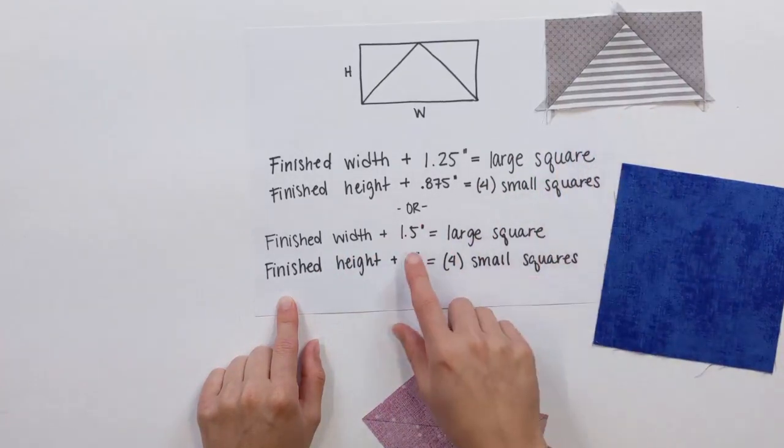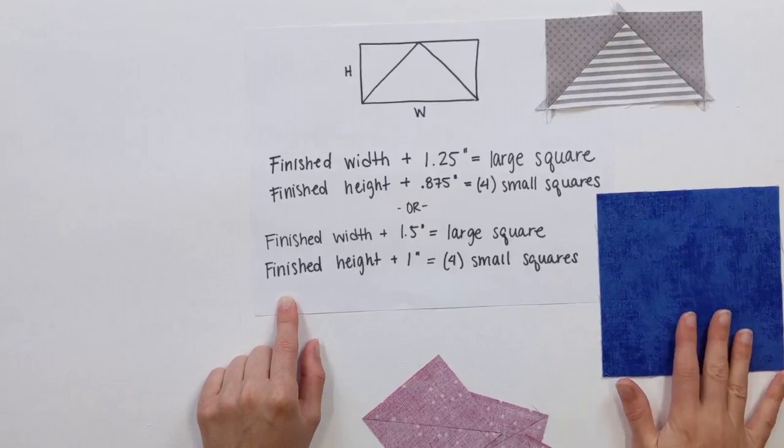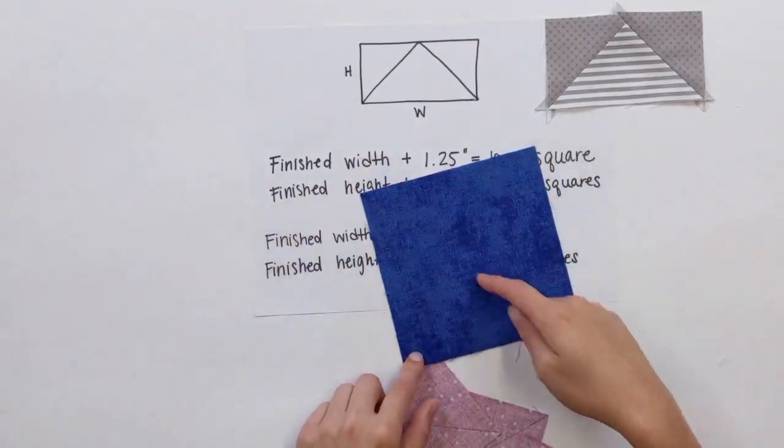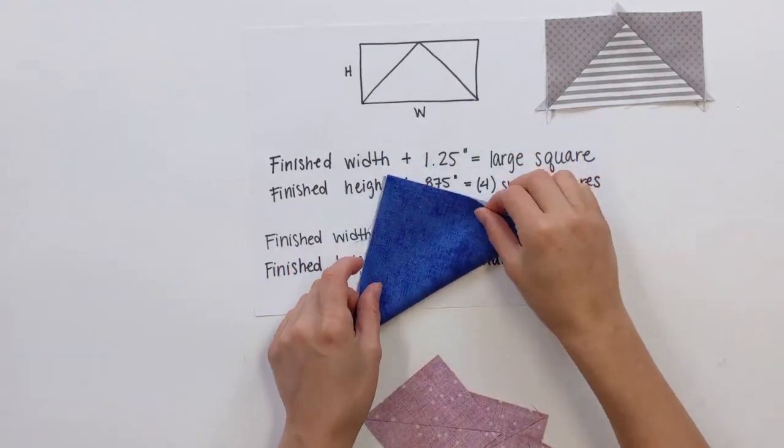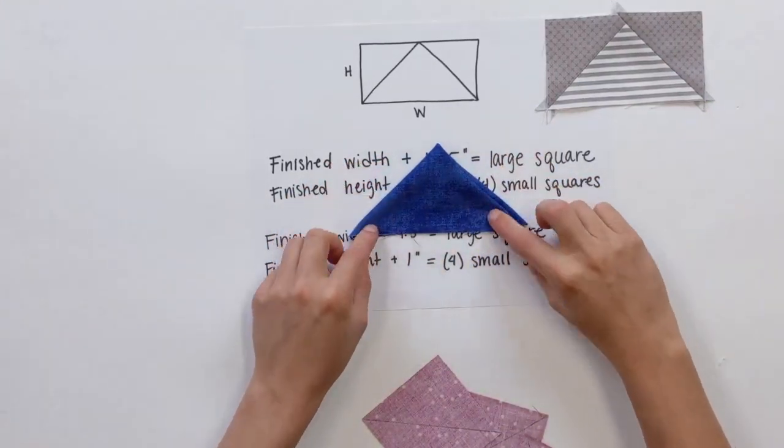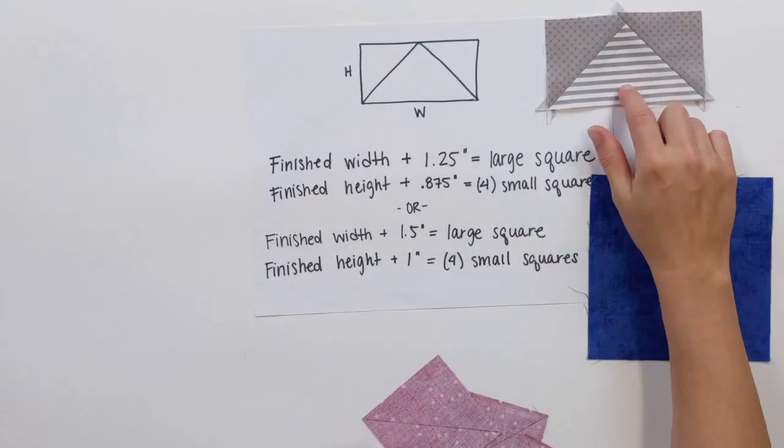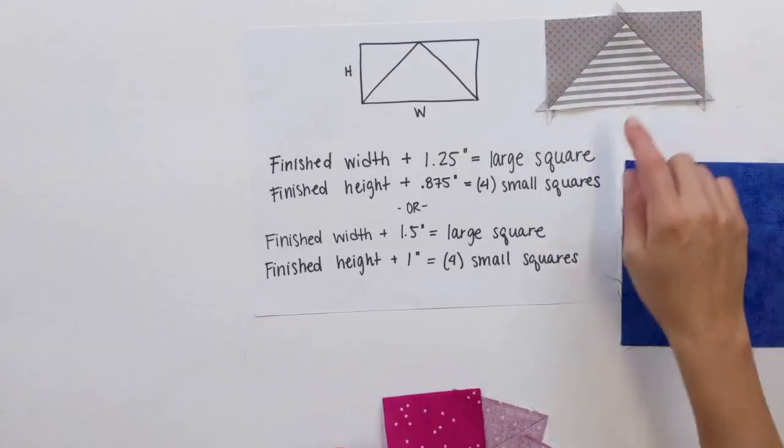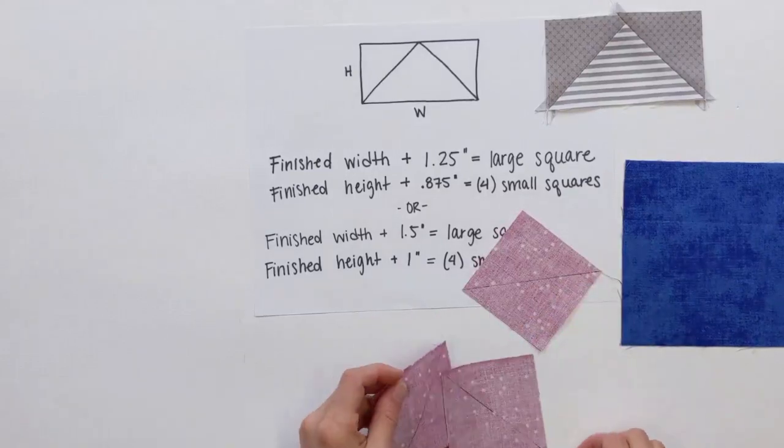And so what I've done is I've actually cut all of these using this formula here. Our finished width, we want 4 inches plus 1.5. So this is a 5.5 inch square. This is my big guy. And what happens in four at a time flying geese is this guy actually gets cut into fours to make that triangle shape in the center. So if you think about this, you cut it, you cut it, and now it's starting to look like a flying geese unit. So that's how you remember your big one equals whatever goes in the middle. Your little ones are going to be the outside. So these are finished height 2 inches plus 1 inch. So we have four 3 inch squares.